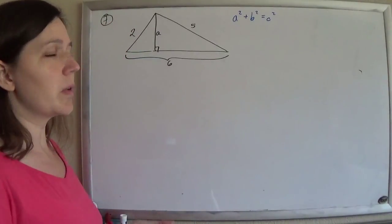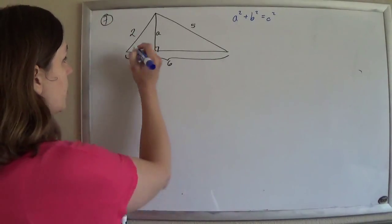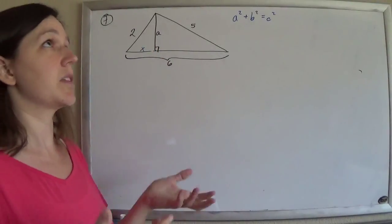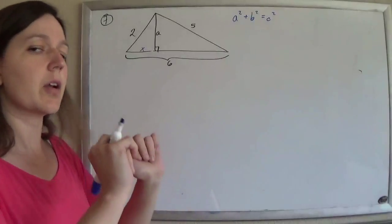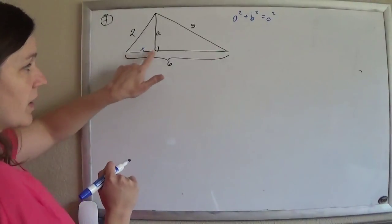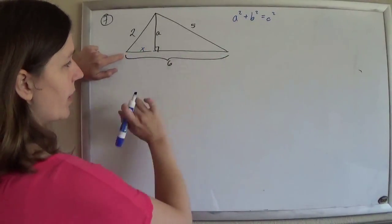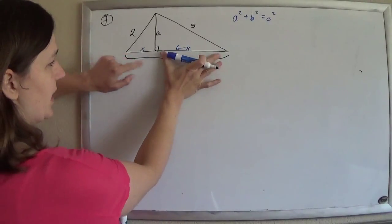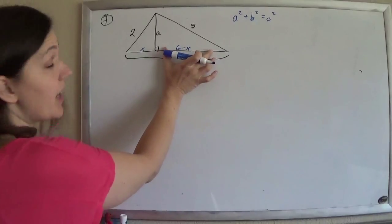And so my dad always told me, when you want to know something that you don't know already, call it x. Give it a name, and I'd be like, dad, that's too many variables. But you'd be like, it'll work itself out. So if I call this guy x, then this guy here will be 6 minus that, because this length here isn't the whole length. Just take away that x and I'll have that.